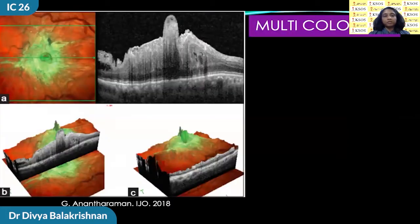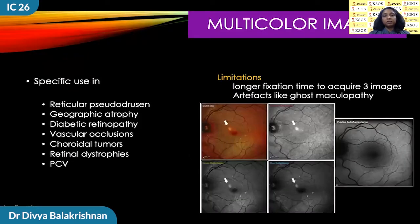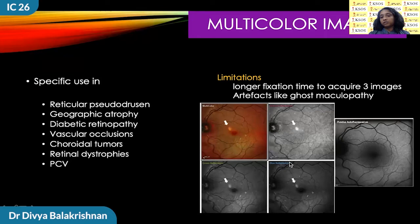A fundus picture taken through a cataractous lens is compared with multicolor imaging — details are better delineated in multicolor imaging. The details of changes due to moderate NPDR like cotton wool patches are better delineated in multicolor imaging, and PDR neovascularization changes are also seen better in multicolor imaging. Multicolor imaging is useful in various conditions like reticular pseudodrusen, geographic atrophy, vascular changes, retinal dystrophies, and PCV. Major limitations include longer fixation time and artifacts like ghost maculopathy, clearly seen as a whitish dot in the multicolor image and all reflectance images but not seen in fundus autofluorescence.